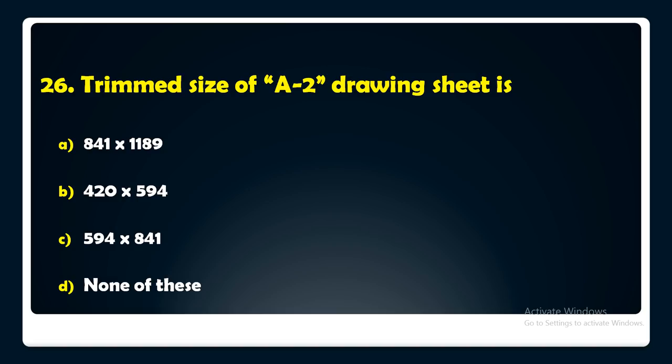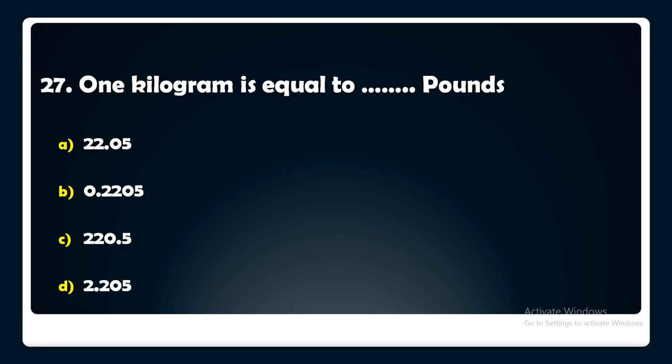One kilogram is equal to how many pounds — 22.05, 0.2205, 220.5, or 2.205? The answer is: one kilogram is equal to 2.205 pounds.